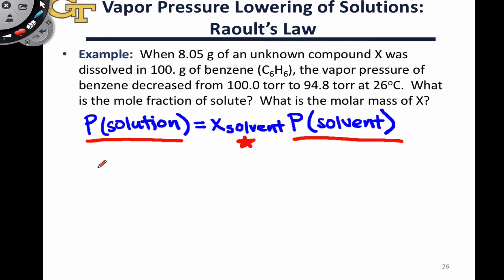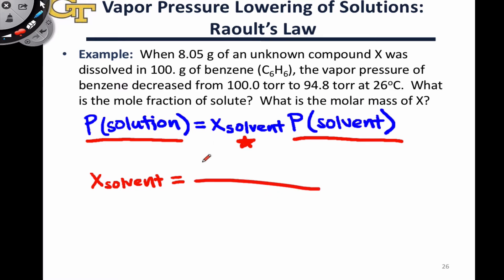Specifically, we can just rearrange this equation by dividing both sides by the vapor pressure of the pure solvent, to come to the conclusion that the mole fraction of the solvent within an ideal solution is equal to the ratio of the vapor pressure of the solution to the vapor pressure of the pure solvent.